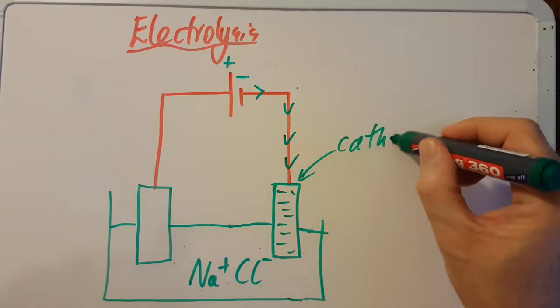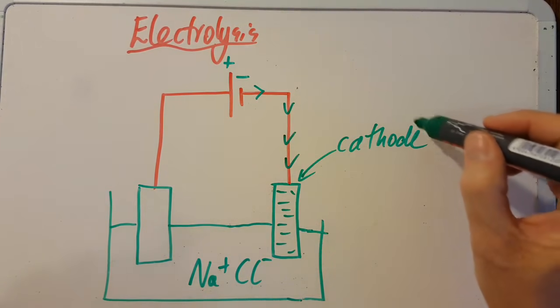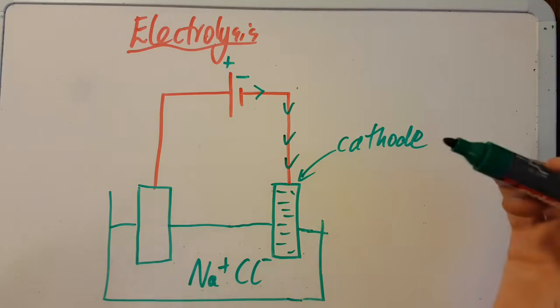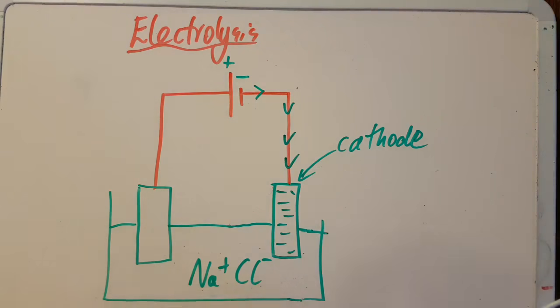Because the cathode is where the electrons are pumped around the circuit to. In this case over here, the other way was red cat - if you remember the red cat.